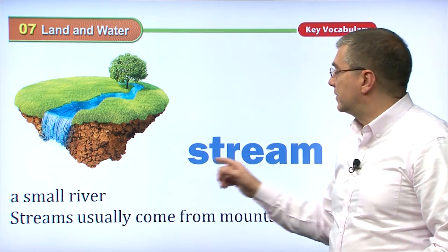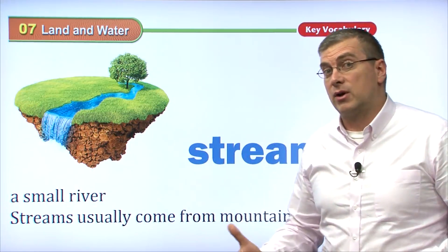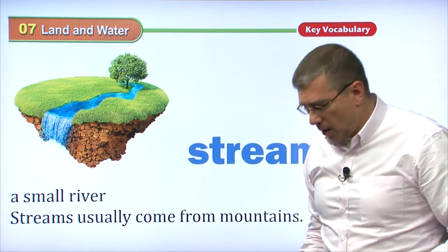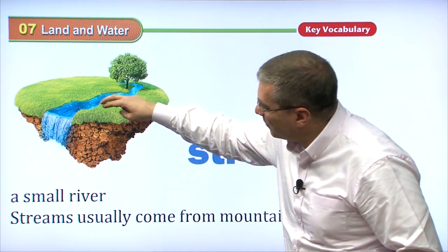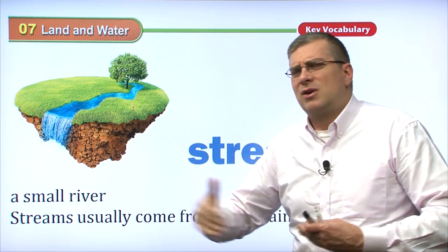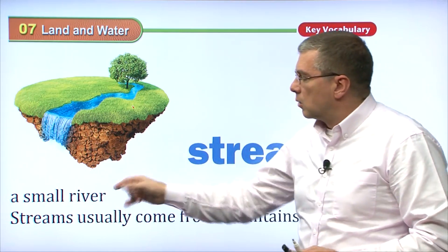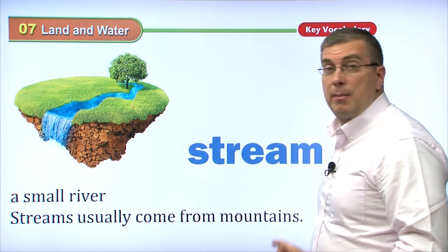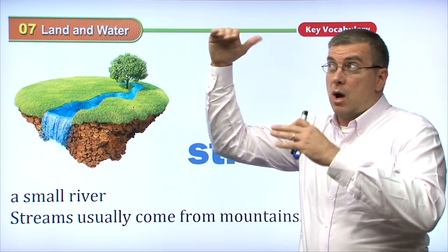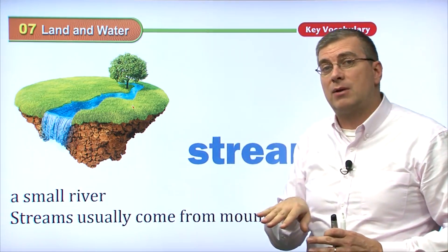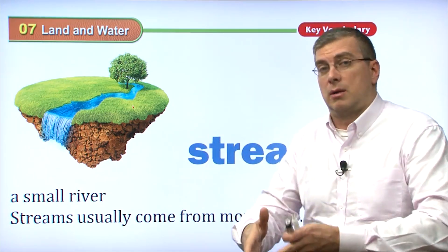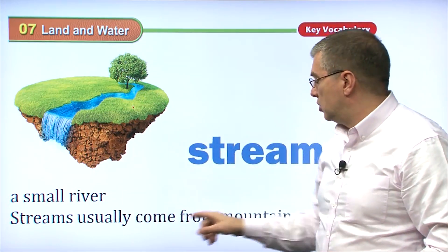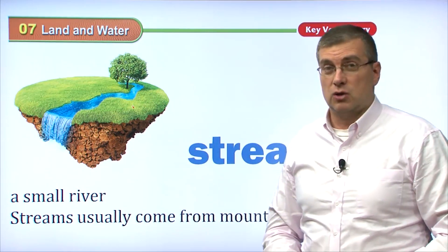Another feature of the land is a stream. We've already talked about rivers — rivers are very big and very wide, but streams are very narrow. You could probably step across a stream from one side to the other. A small river is what we call a stream. Streams and rivers usually come from the mountains — there's water high up on the mountains and the water has to come down. If there's a lot of water, a river comes down; if there's only a little bit, a stream will come down.